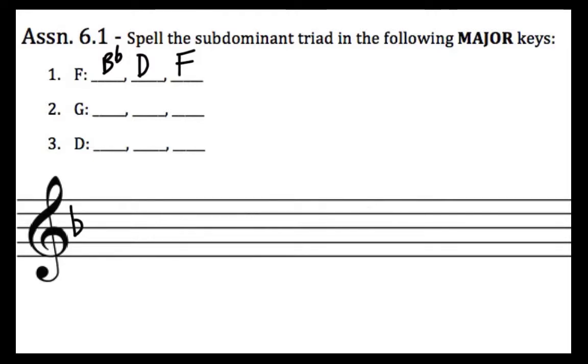For the key of G, which is the key signature that has one sharp, let's put a G scale: G, A, B, C, D, E, F sharp, G. The fourth scale degree is C, and if we build a snowman on top of C we get C, E, G. So the subdominant triad in the key of G major is C, E, G.